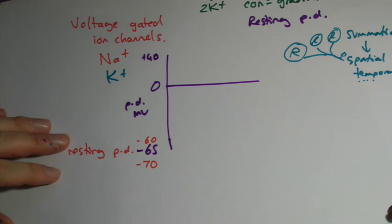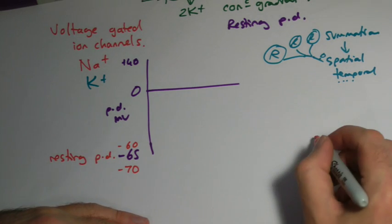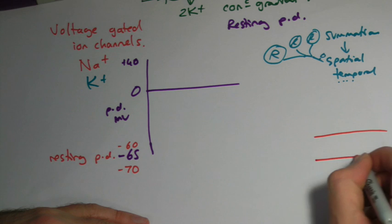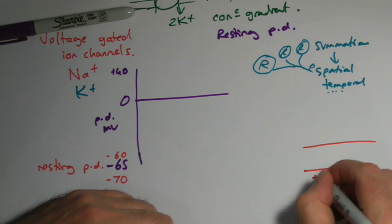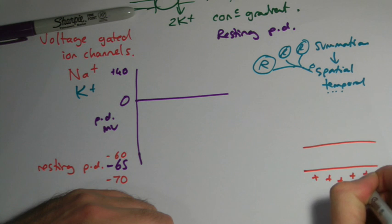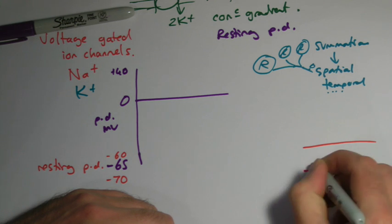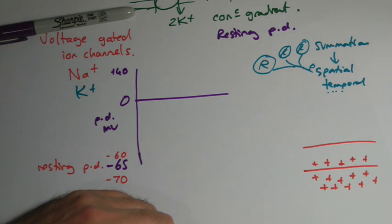I prefer the minus seventy, but there we go. So, normally in a cell, in the neuron, let's just draw one here, because of that sodium-potassium pump, we've got lots of positive charges outside in the extracellular fluid, and not so many on the inside.